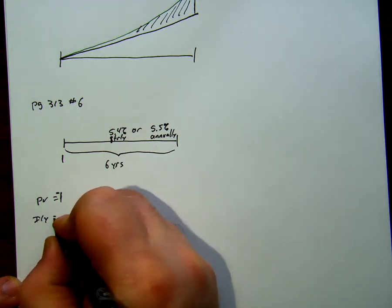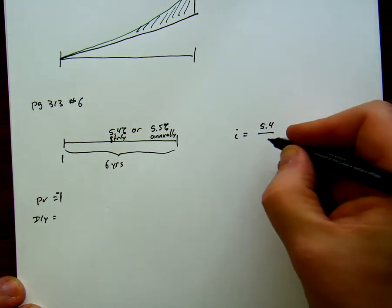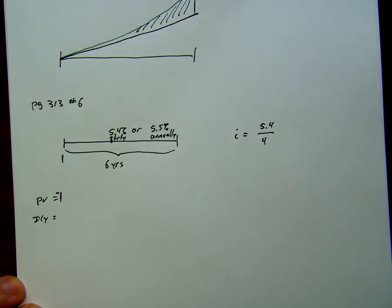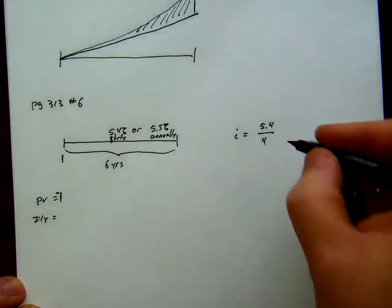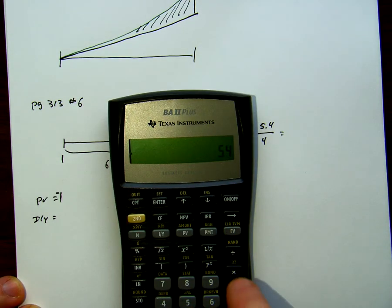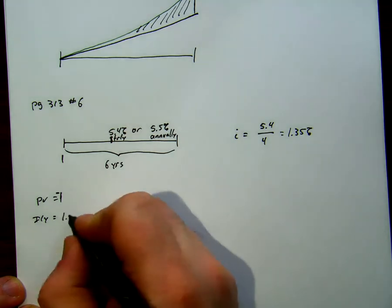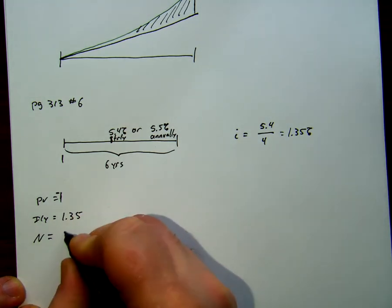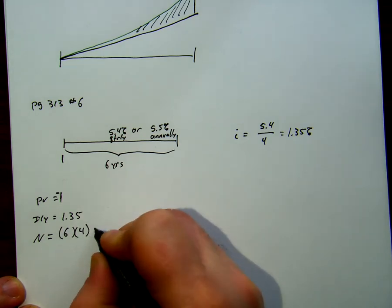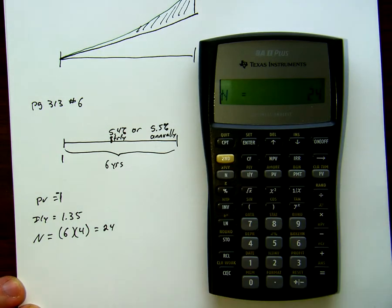Our i per y, well, first of all, our i, we'll do the 5.4% first. This is 5.4% over four times per year. It's our nominal rate over number of compoundings. 5.4% divided by four is 1.35. I'm going to store that straight into i. This is 1.35% quarterly, for each quarter. So, put this 1.35. Our n is then number of years times compoundings per year, 24. So, 6 times 4, 24 compoundings going into n.